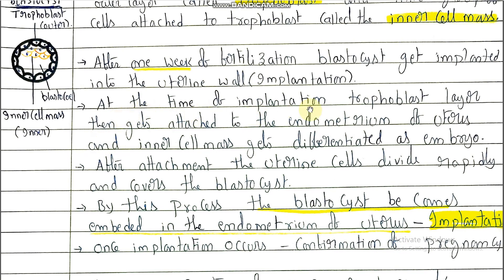At the time of implantation, the trophoblast layer gets attached to the endometrium of the uterus, and the inner cell mass gets differentiated as an embryo. Embryo development takes place from the inner cell mass. The function of the trophoblast is to attach to the endometrium of the uterus.